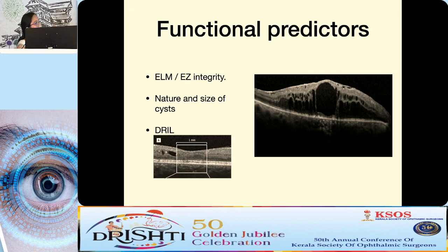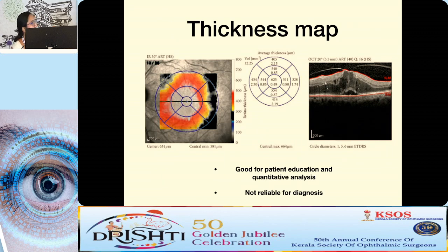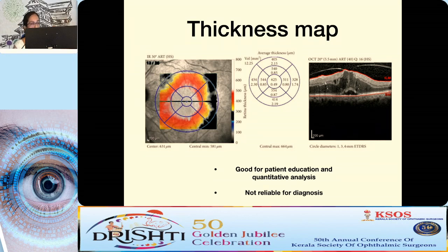A newer concept in diabetic retinopathy is disorganization of retinal inner layers — DRIL. The retina normally has alternating hypo- and hyper-reflective bands; in DRIL there is disorganization of this banded structure in the foveal area, considered a bad prognostic sign in diabetic macular edema. Regarding thickness maps: they are useful for patient education and quantitative analysis but cannot be relied on for diagnosis alone, as they are subject to segmentation errors. The B-scan may reveal a vitreoretinal interface membrane pulling the fovea upward — a surgical indication that a thickness map would miss.